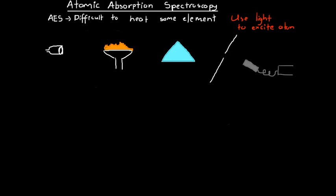In atomic absorption spectroscopy, we have a lamp made of the same metal we're trying to analyze. For example, if we have a sample of sodium, we use a sodium lamp. That lamp releases frequencies of light emitted by sodium atoms as they de-excite — and those are exactly the frequencies that will be absorbed if sodium is present in our sample. We then spray our sample solution into a flame.